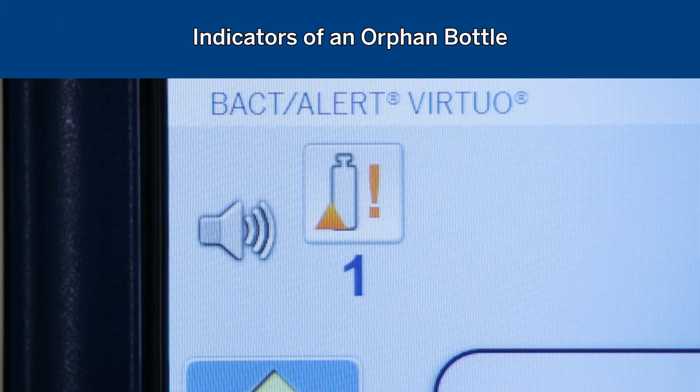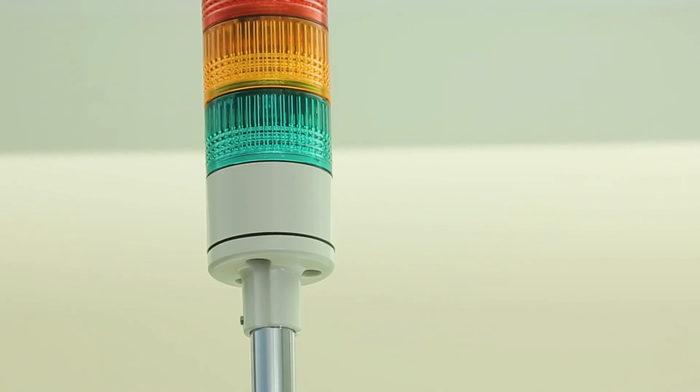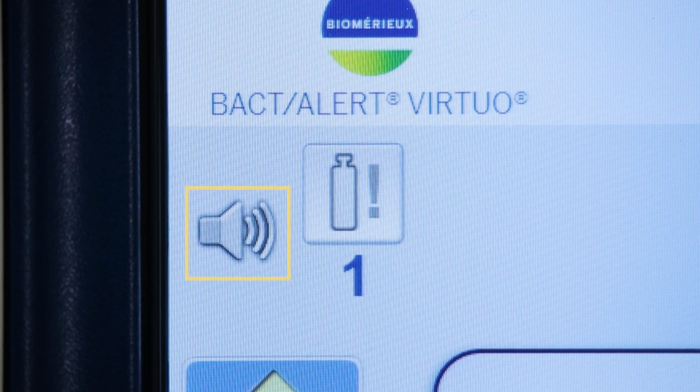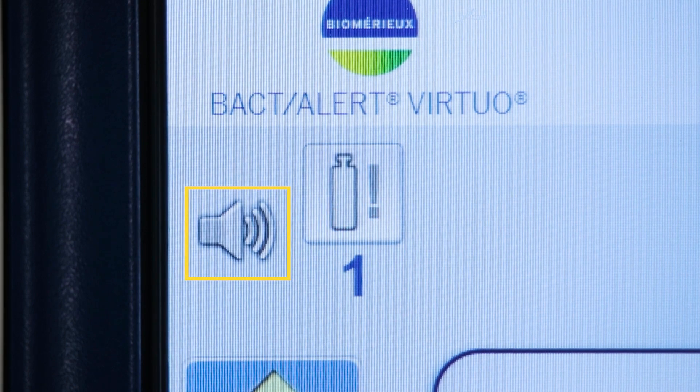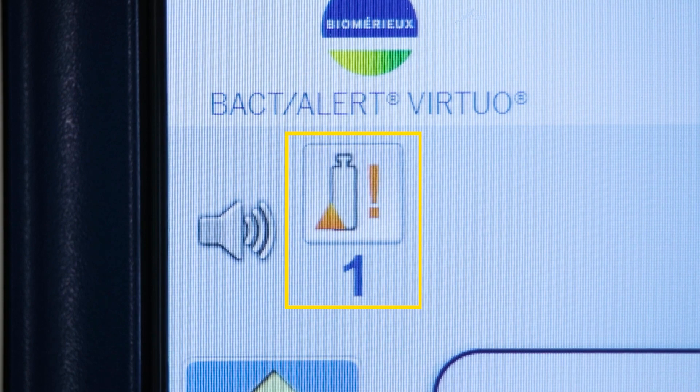Indicators of an orphan bottle: When the BactiAlert Virtuo determines a bottle to be an orphan, the user will be alerted in several ways. Blinking green lights on the warning tower and system status indicator, an audible alert if configured, and a bottle alert indicator on the large display screen.